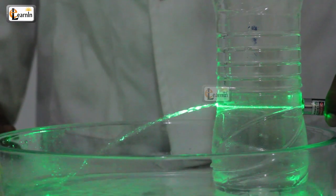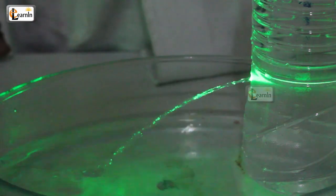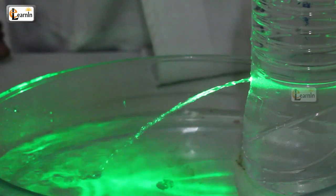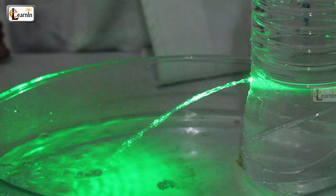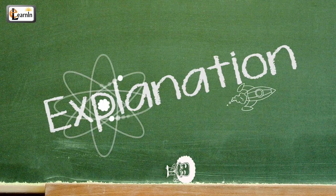Notice that the laser beam follows the laminar flow of the water stream and the beam crashes down along with the water into the bowl. Explanation: first things first, in this experiment technically the light does not bend.